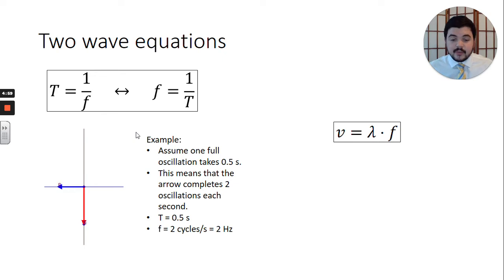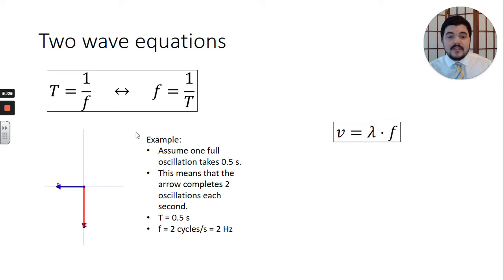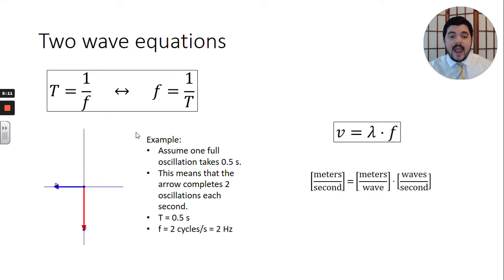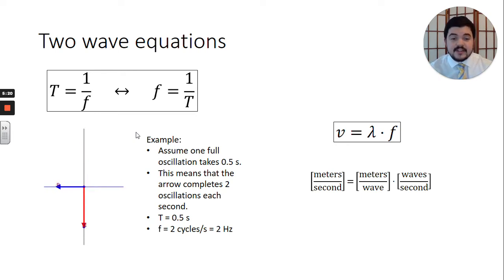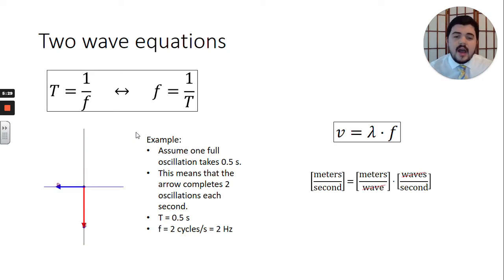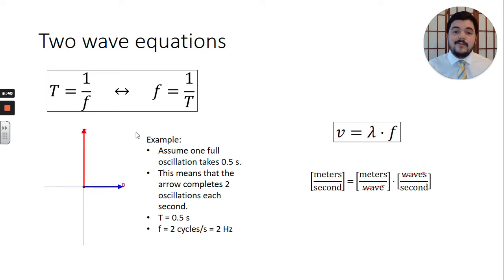The other equation relevant for waves is: speed equals wavelength times frequency. To justify this we look at the units. On the left we have meters per second. Wavelength is meters per wave, and frequency is number of waves per second — the waves cancel out, so our units match up. Also, the meters of distance that one wave covers multiplied by the number of waves passing by each second tells you how fast your wave is going.